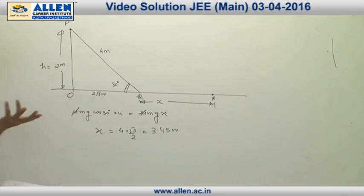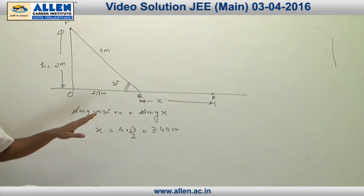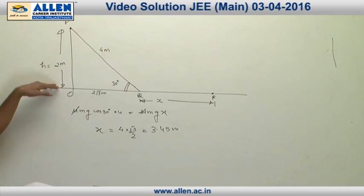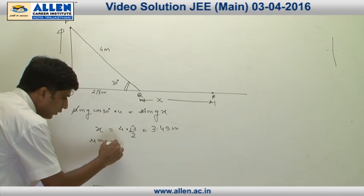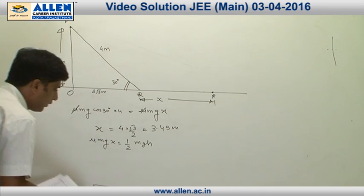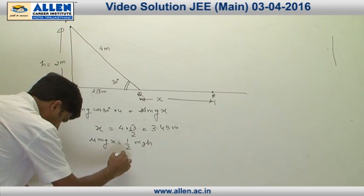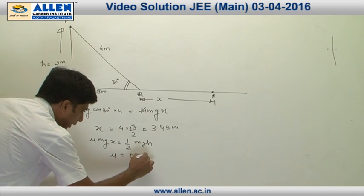Now to calculate the value of mu, we can equate mu mg x to half of the value of mgh. So mu mg x equals half of mgh. From here we get the value of mu as 0.29. Therefore, the correct answer is answer number 4.